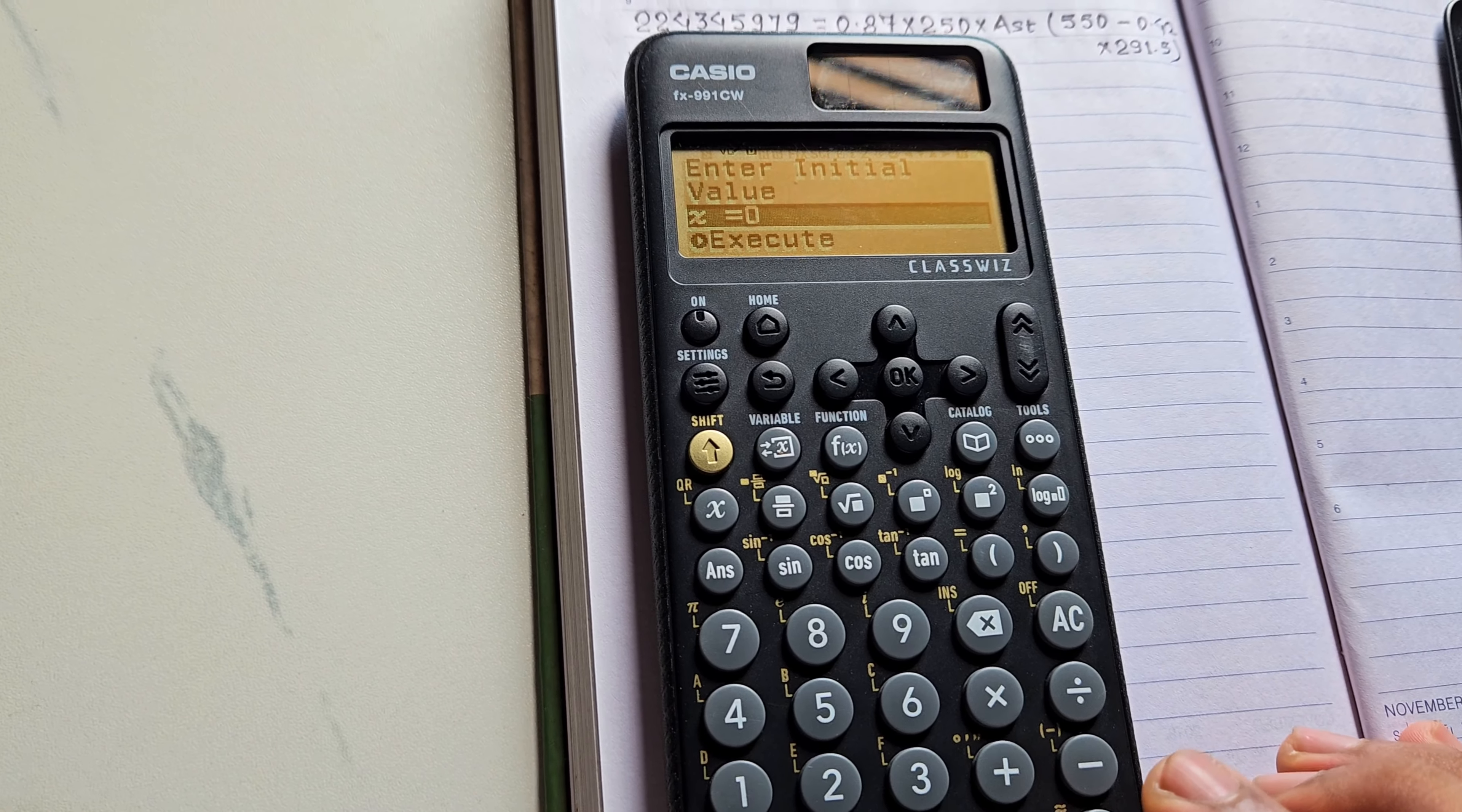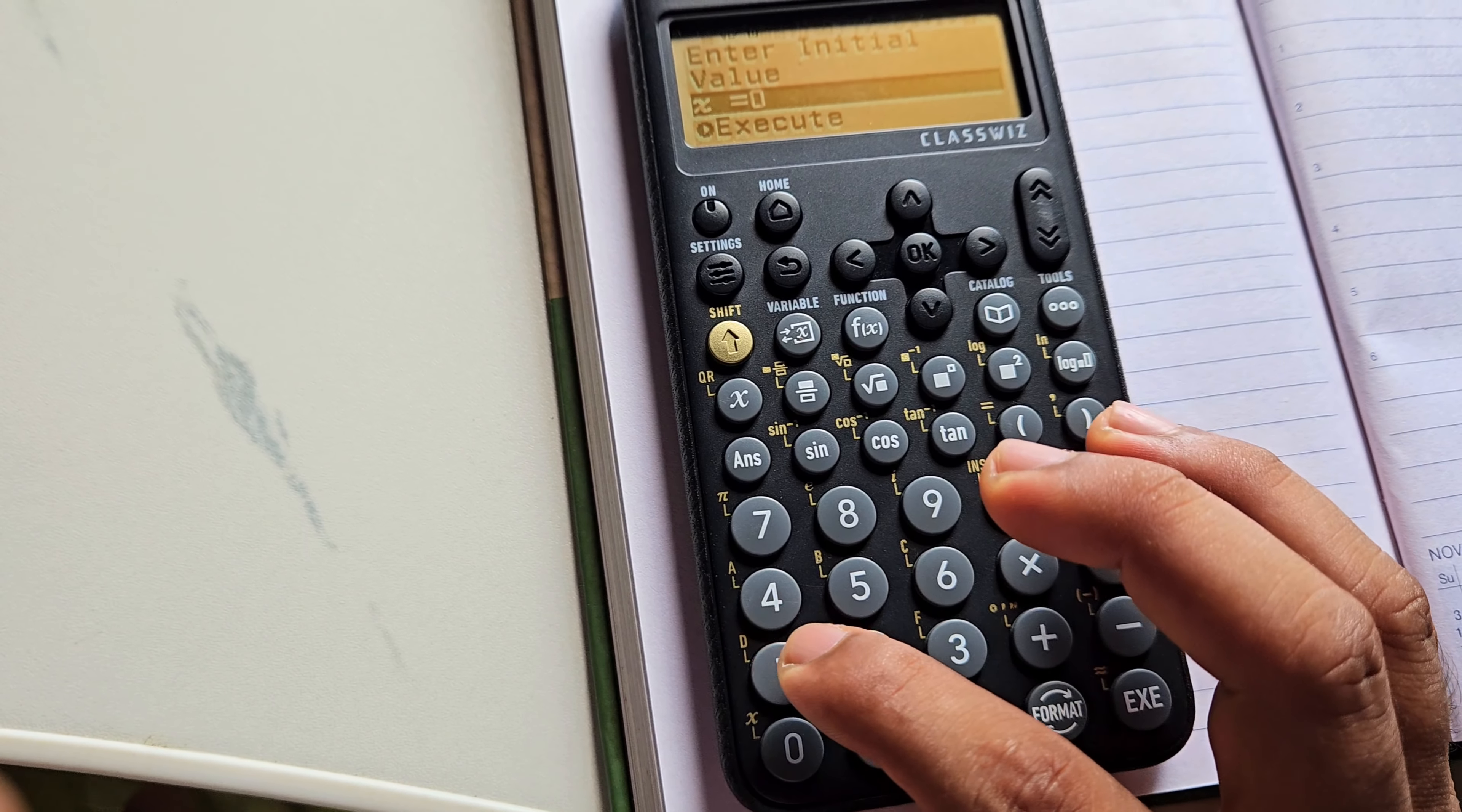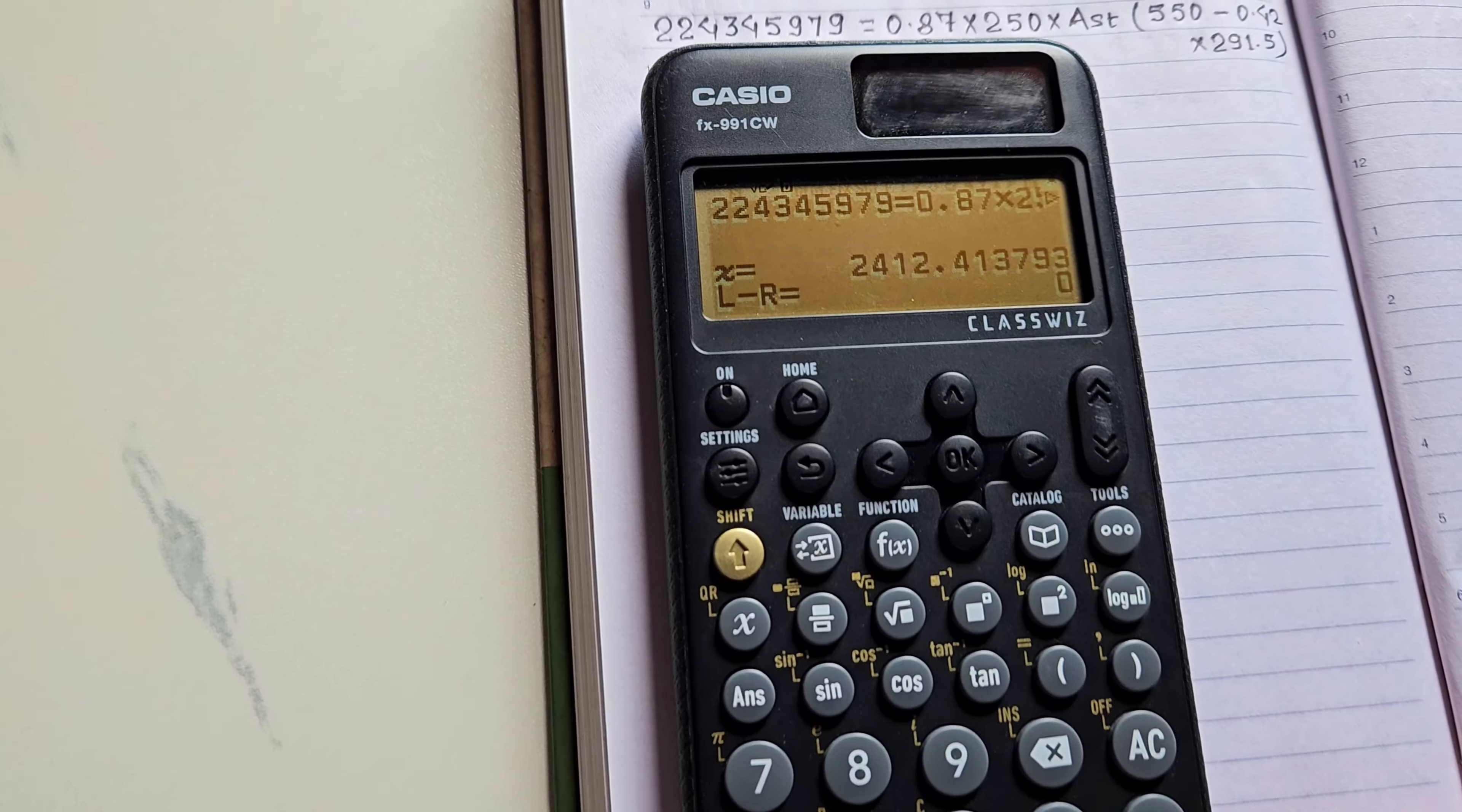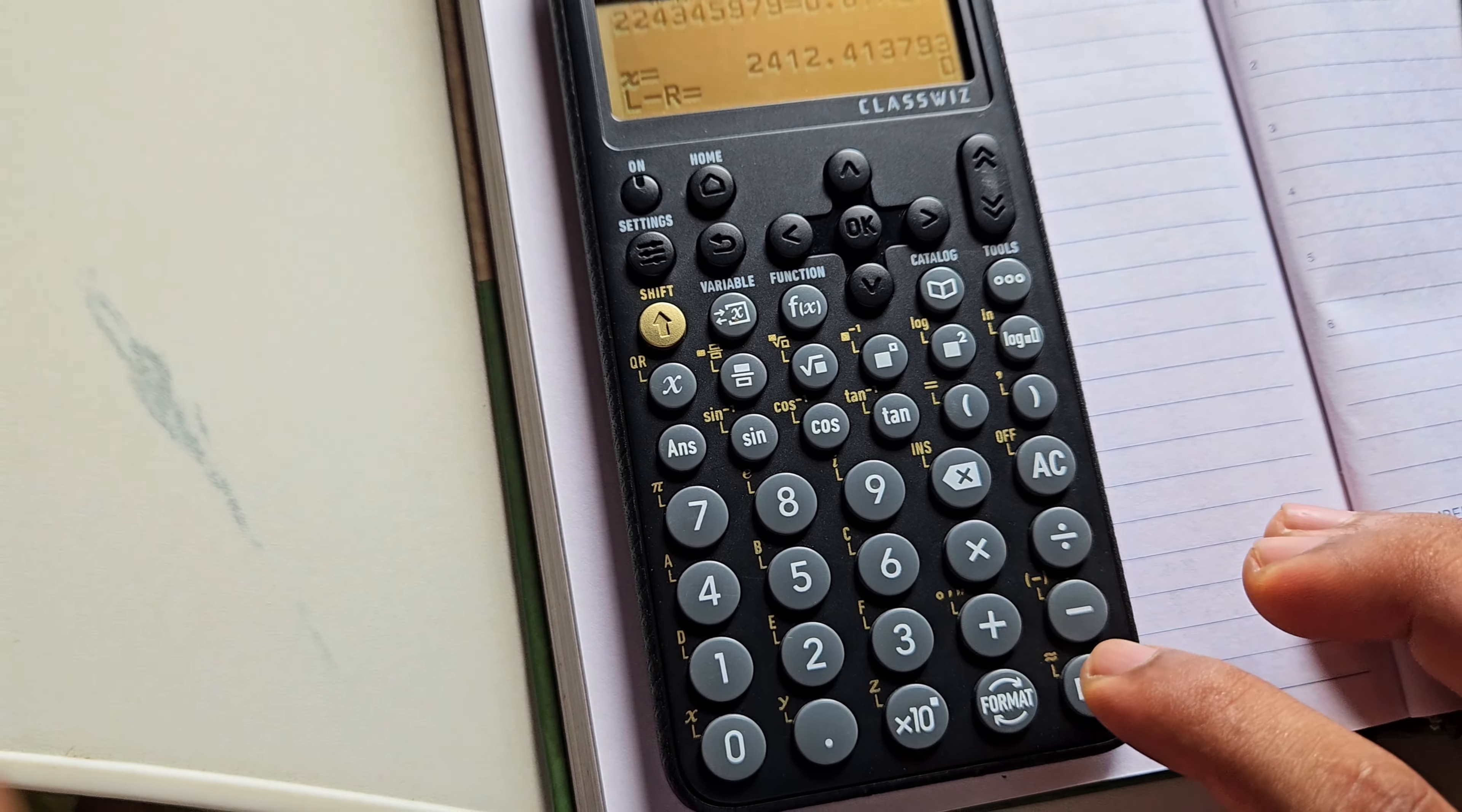And here you are asked to enter the initial value for X. You can enter any initial value for X. Suppose I entered here 100. And after entering, click on execute. And yes, here you can get the value of X. You can see there, X is equal to 2412.413793.